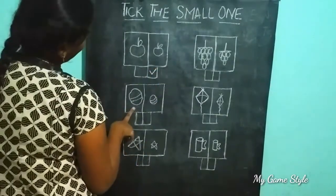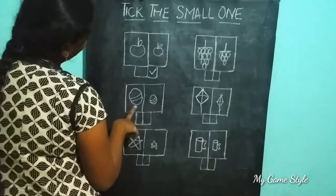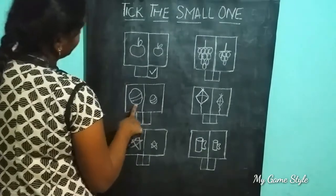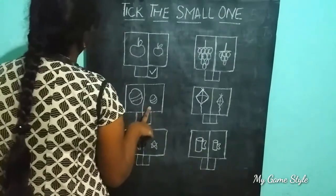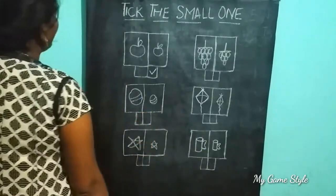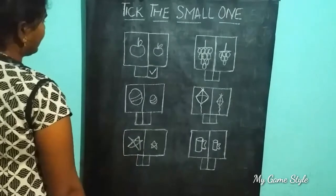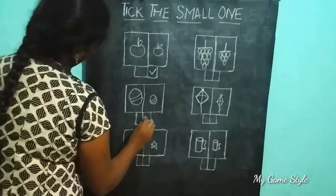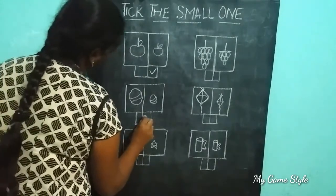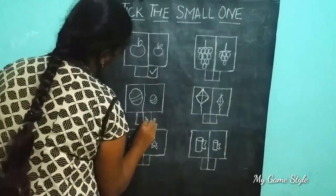This is a big ball. This is a small ball. So we need to tick the small one. This is a small one.